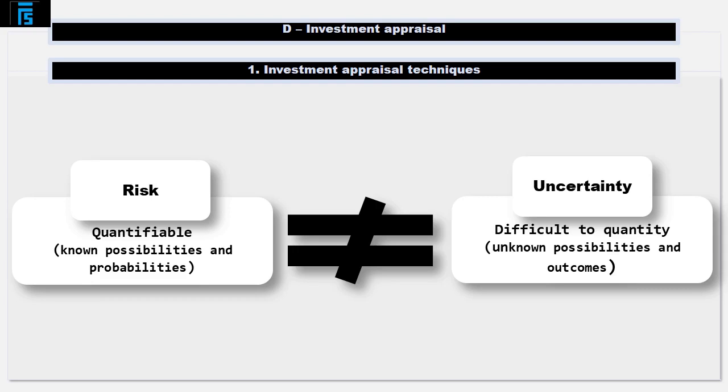Often, one person's risk is another person's uncertainty. If an individual has experience of a situation, they may well have an idea of what may happen and how likely it is to happen. This may not be the case if the situation is new to the individual. We often use the terms risk and uncertainty interchangeably, but just bear in mind that technically they are different things.